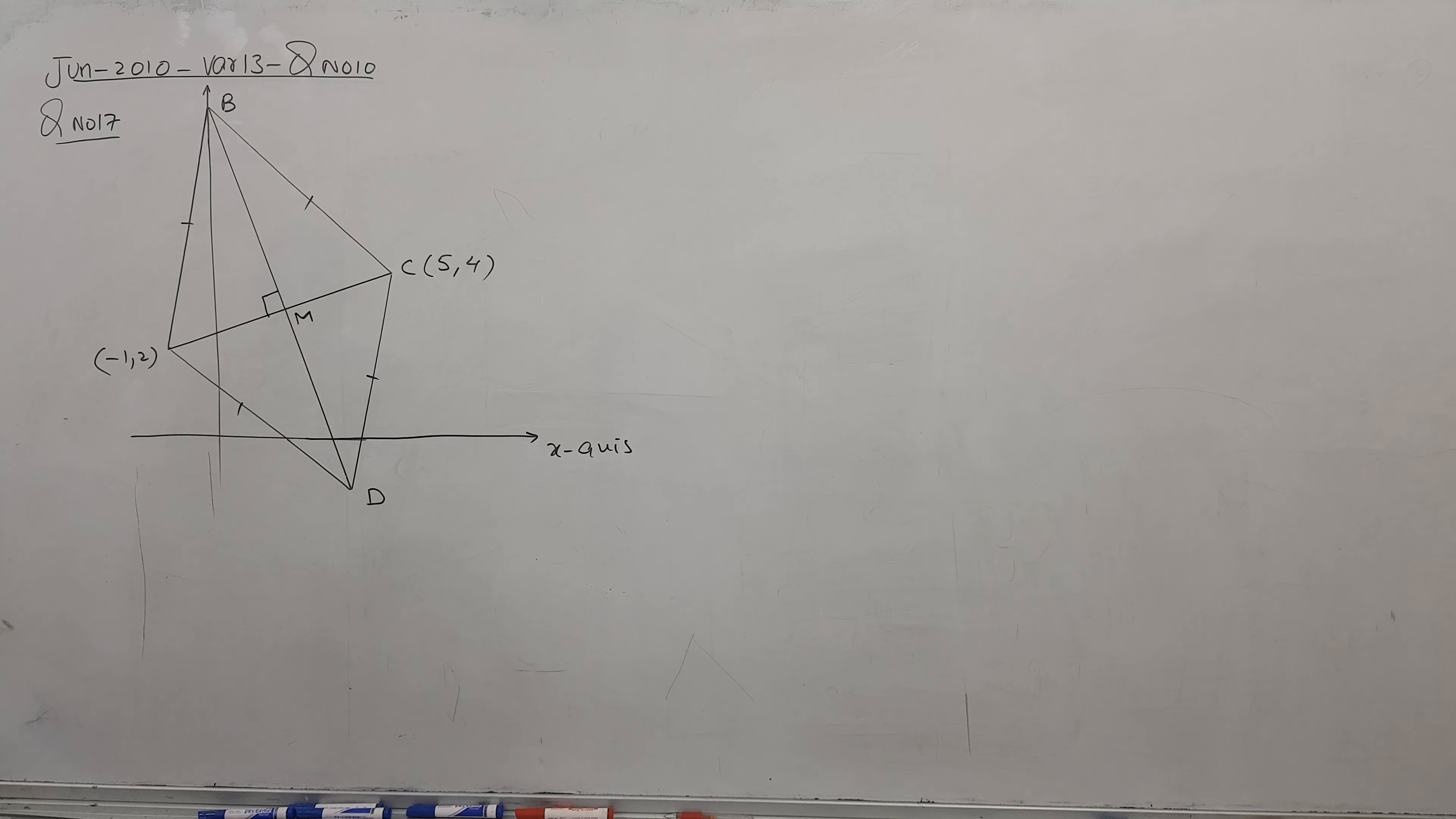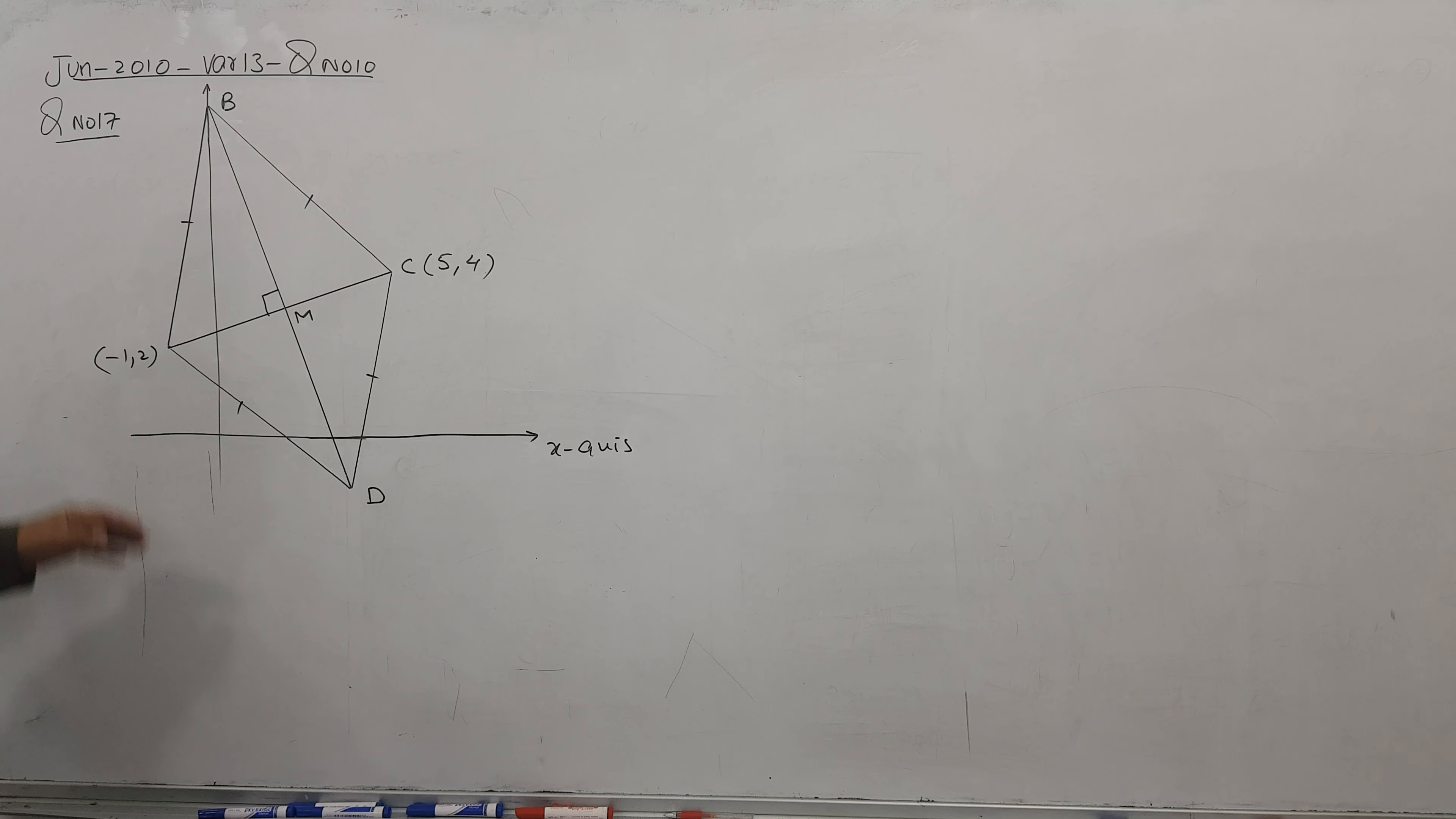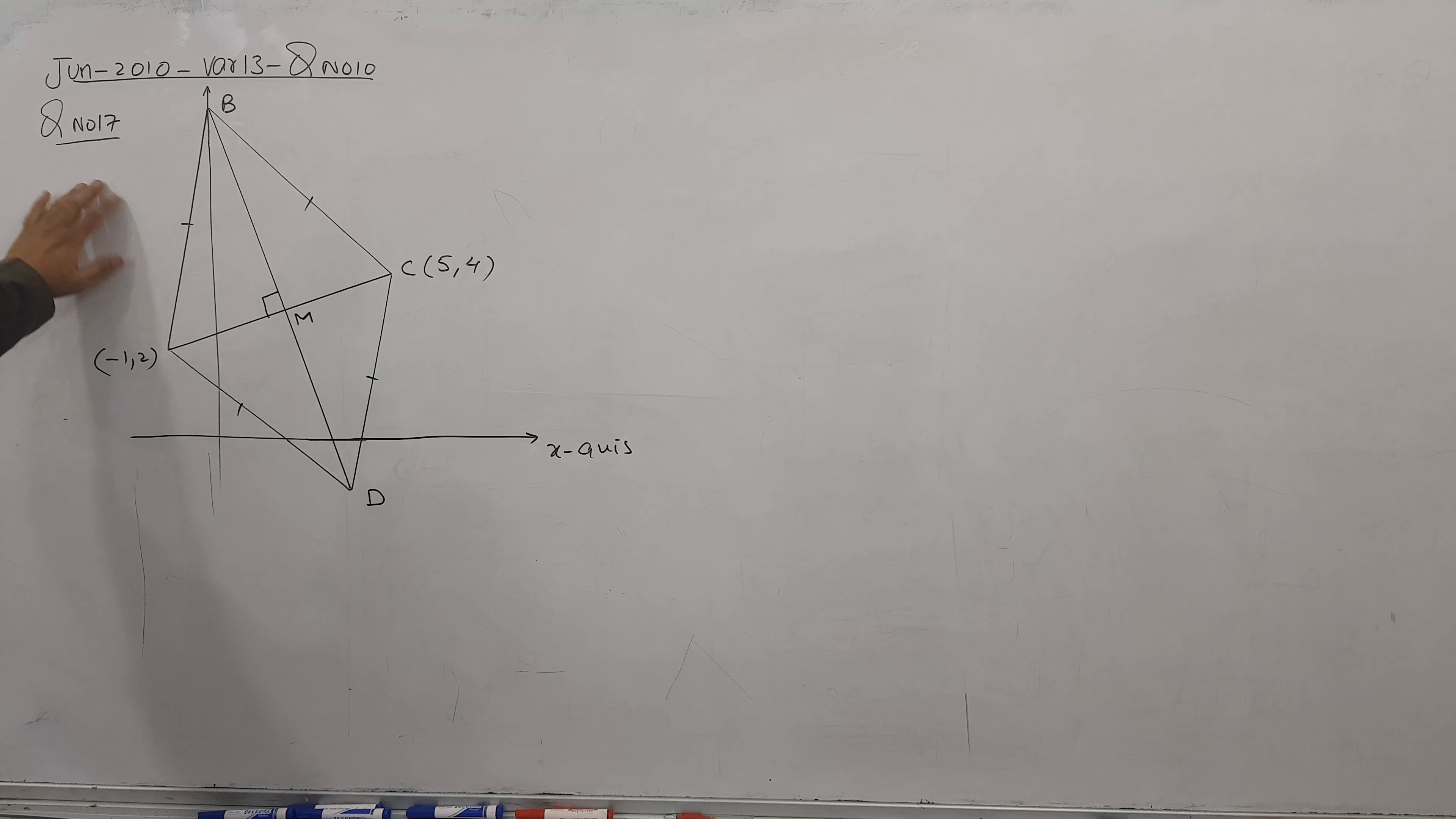Bismillah ar-Rahim, this is June 2010 Gradient 13 question number 10, coordinate geometry of AS level, worksheet question number 17. First of all, we need the equation of perpendicular bisector of BD. First part, so easy inshallah.